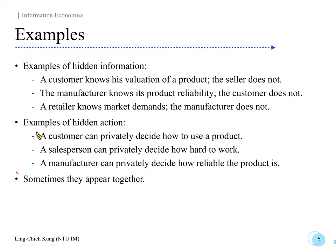Sometimes hidden information and hidden actions appear together — just like with the manufacturer, retailer, and consumer. All these things may be intertwined, and we need to take a look at everything because there are so many pieces of information — some are hidden information, some are hidden action.